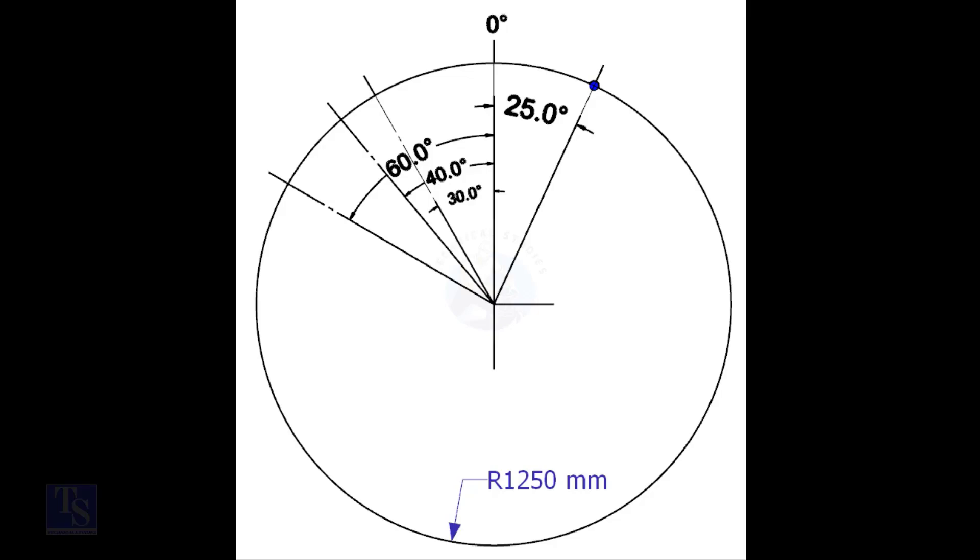Mark the zero-degree line. As per the drawing, zero-degree is rotated 25 degrees anti-clockwise from the center of the weld joint.